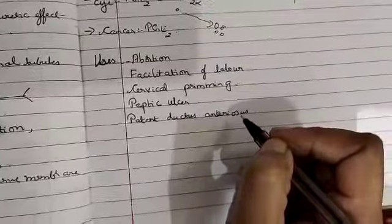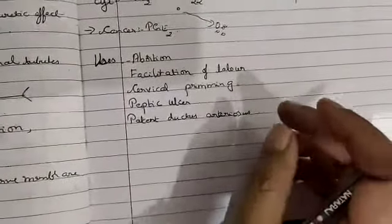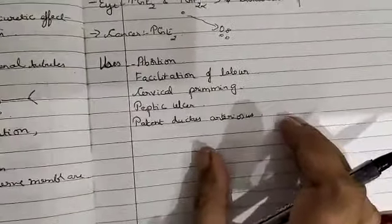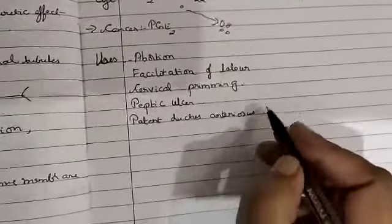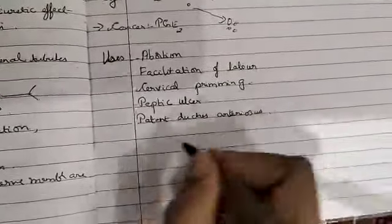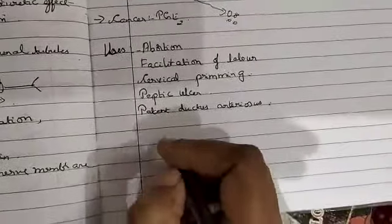Patent ductus arteriosus normally depends upon especially at the time of birth. After the childbirth it is closed and normal heart circulation occurs.